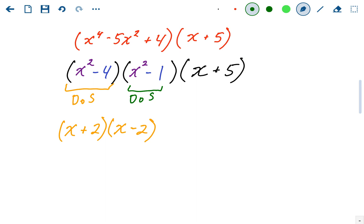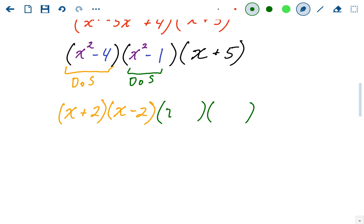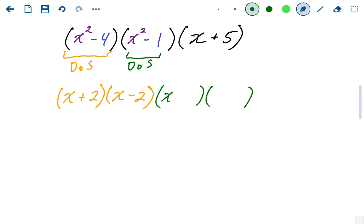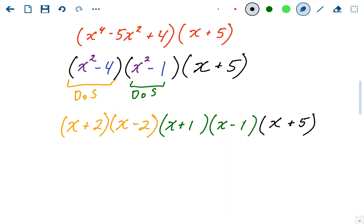Now for the second one, also a difference of squares. Same thing. We're going to have two binomials with the same numbers but opposite signs. So square root of x squared is x. Square root of 1 is 1. So we'll have x plus 1, x minus 1. And then again, that first factor, x plus 5, just hanging out, enjoying the ride.